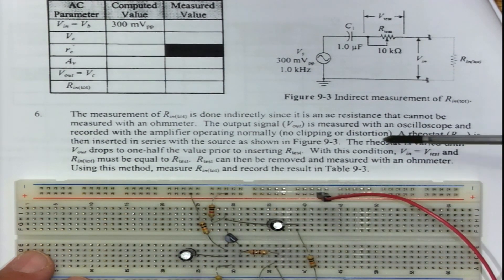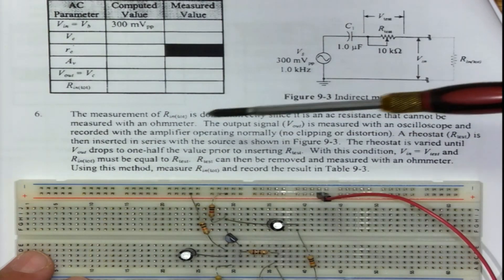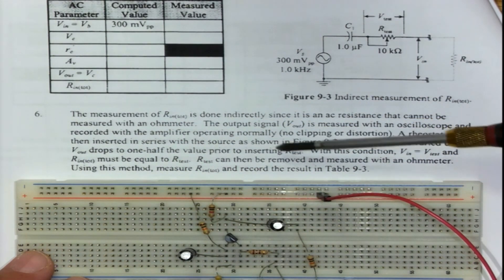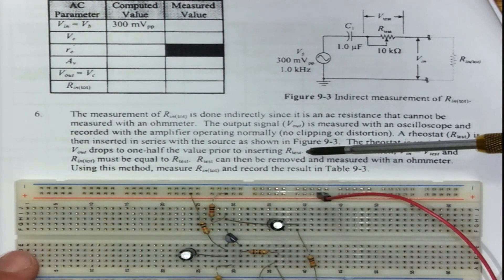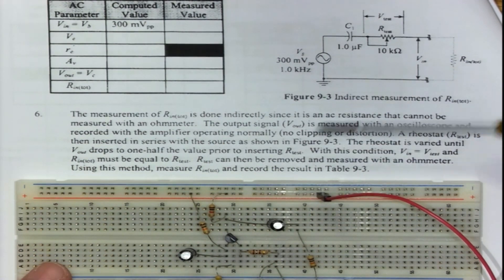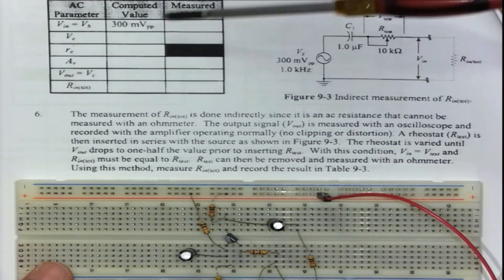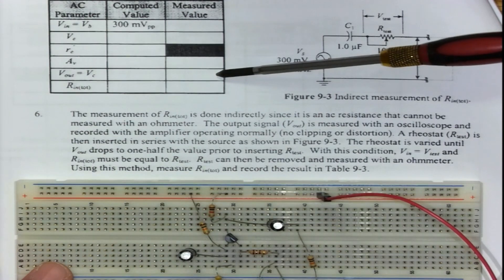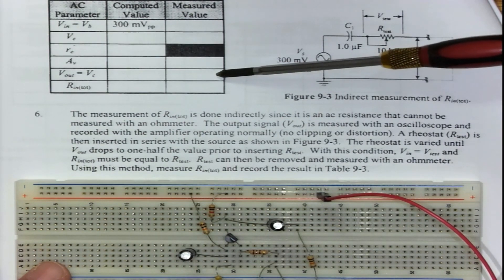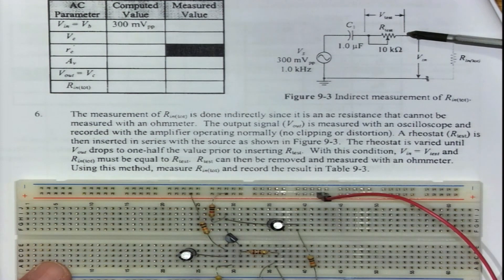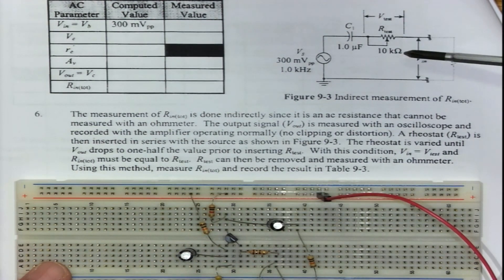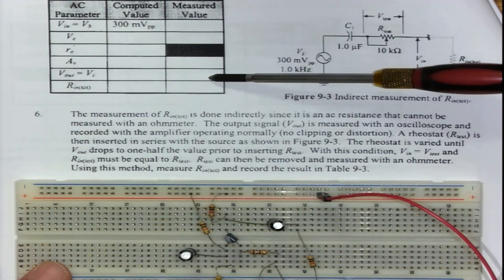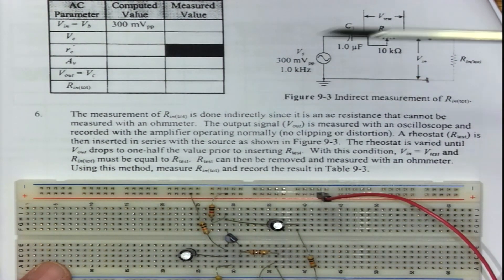The rheostat is then varied until the output voltage drops to one half of what the output was before we included this resistor. We're going to write down what is Vout, typically in the order of about two volts, then install this to the board and adjust it until Vout is down to one volt.